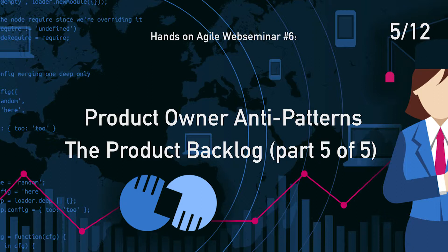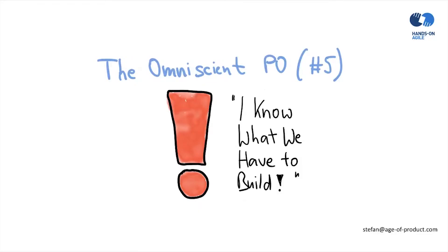Number five, the omniscient PO. That's a product owner without any doubt where to go. This product owner does not need the team.